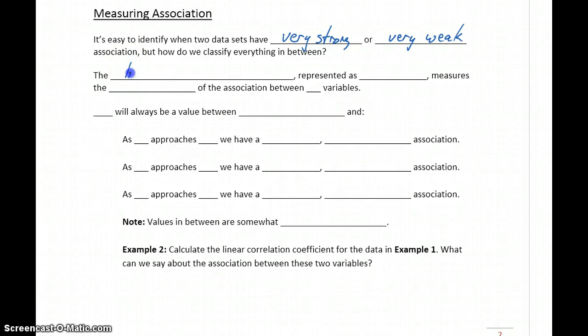So what we want to introduce is a measurement called the linear correlation coefficient. The linear correlation coefficient, represented as either a lowercase r or a capital R, just depending on the source you're looking at, is used to measure the strength of the association between our two variables.